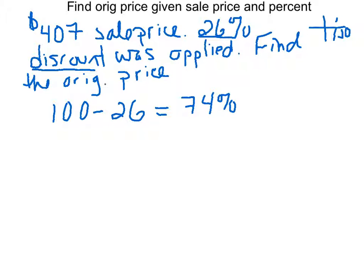So if we did it in reverse, we would have taken the original price, multiplied by 0.26, and then subtracted that from the original. We're just going to cut out that big long step and just say that the 407 represents 74% of some number.